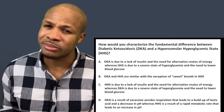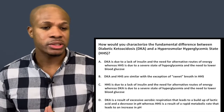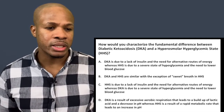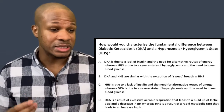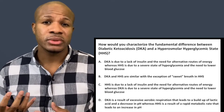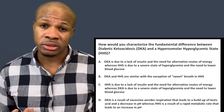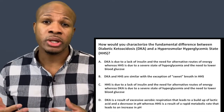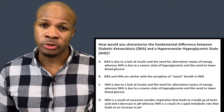Now let's go on to question number three, which is a little bit more challenging. Question number three states: how would you characterize the fundamental difference between diabetic ketoacidosis and a hyperosmolar hyperglycemic state, HHS? DKA and HHS are two conditions we need to be familiar with, so let's look at the answer choices to see which one properly characterizes the difference or similarities between these two conditions.